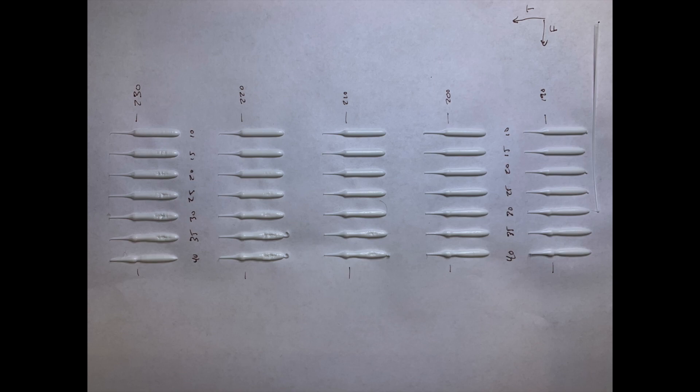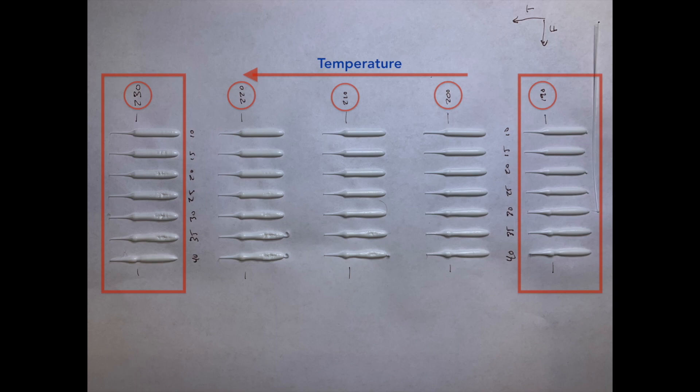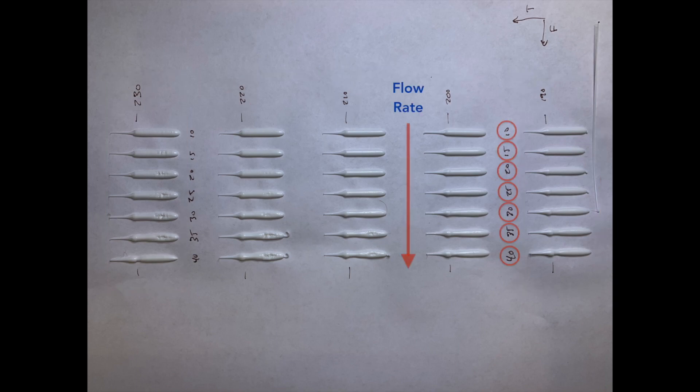Let me explain. The belt in this test moves left to right, meaning we need to read this right to left. Each column represents a temperature. Lower temperatures are on the right, higher on the left. And each row represents a flow rate, lower extrusion rate on the top to faster on the bottom.